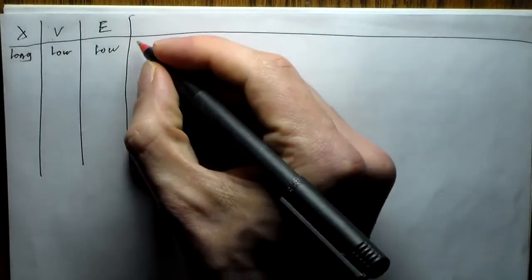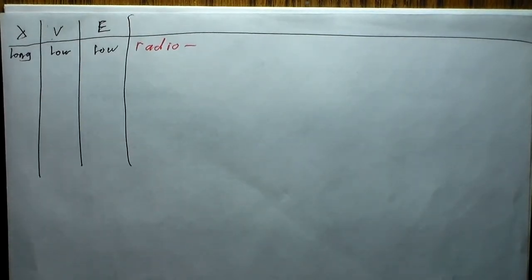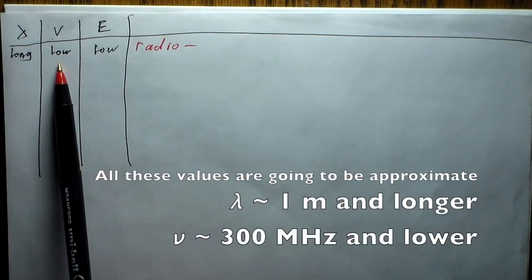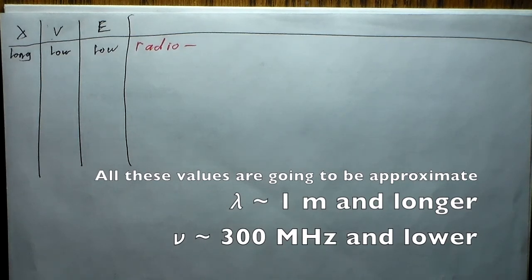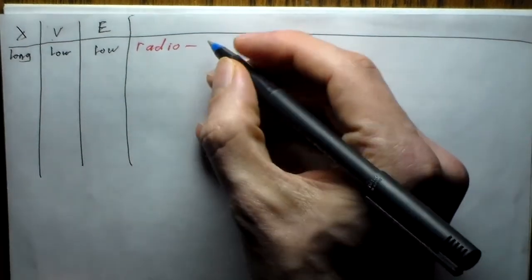The first region is radio waves. You've all heard of radio waves — that's what transmits information for your TV and radio stations. These have very long wavelengths and very low frequencies, which is why radio stations are referred to in kilohertz and megahertz. The energies are very low as well. The processes radio waves cause in electrons or protons are called spin flips.